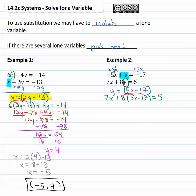First we need to distribute the eight, so we have seven x plus forty x minus one thirty six equals five. Combine like terms, forty seven x minus one thirty six equals five.